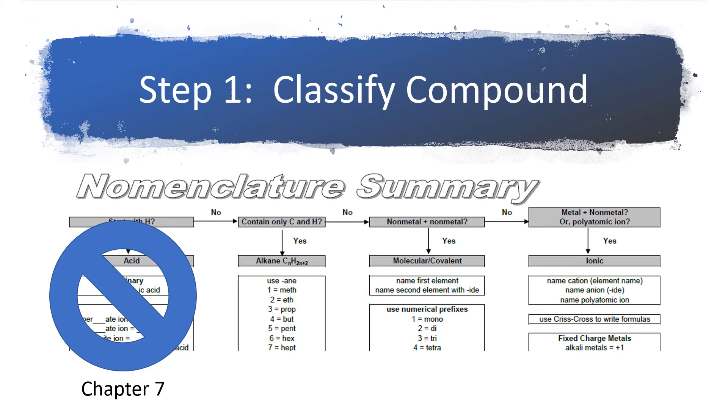For instance, in the first column, it asks, does the compound start with H? Does it start with hydrogen? And then the second column says, does it contain only carbon and hydrogen? So treat this like a flowchart. If the answer to the first question is no, then you move to the right. If it's yes, you move down.